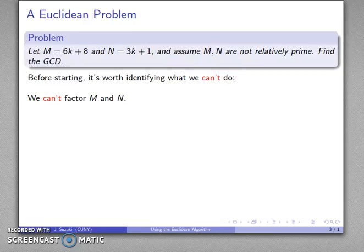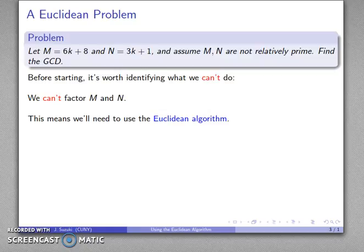We can't actually factor m and n. We can't determine what they are products of. And so this means that finding the greatest common divisor is going to require us to use the Euclidean algorithm.